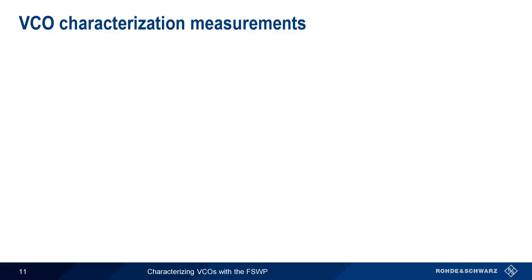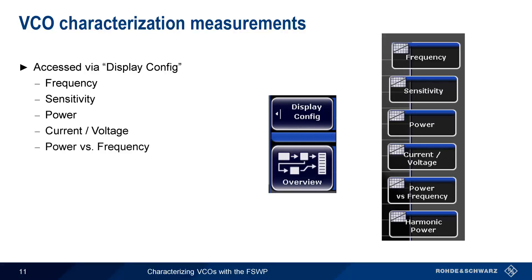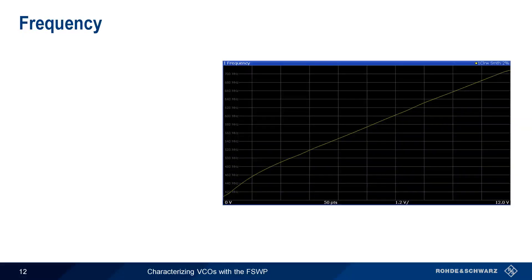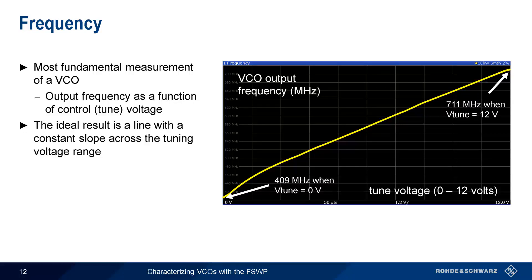Now that we know how to configure voltages, let's move on to measurements, which are accessed using the Display Config soft key. These measurements are: frequency, sensitivity, power, current versus voltage, power versus frequency, and harmonic power. We'll start with the frequency measurement — this is the most fundamental measurement of a voltage-controlled oscillator, and is a plot of the output frequency as a function of the control or tune voltage. In this example, the output frequency is about 409 MHz when tune voltage is zero, and about 711 MHz when tune voltage is plus 12 volts. In almost all cases, the ideal result is a straight line, that is, a line whose slope is constant over the tuning voltage range. The results shown here are fairly linear, except at very high and particularly at very low tuning voltages.